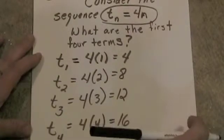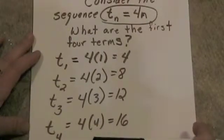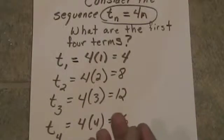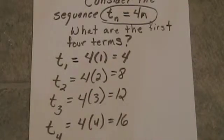So it's just that easy. These explicit formulas really aren't that bad as long as you know what the argument is to send to the function.